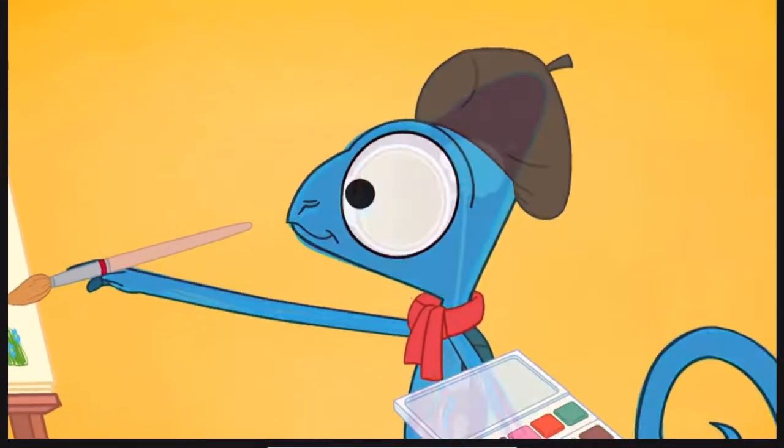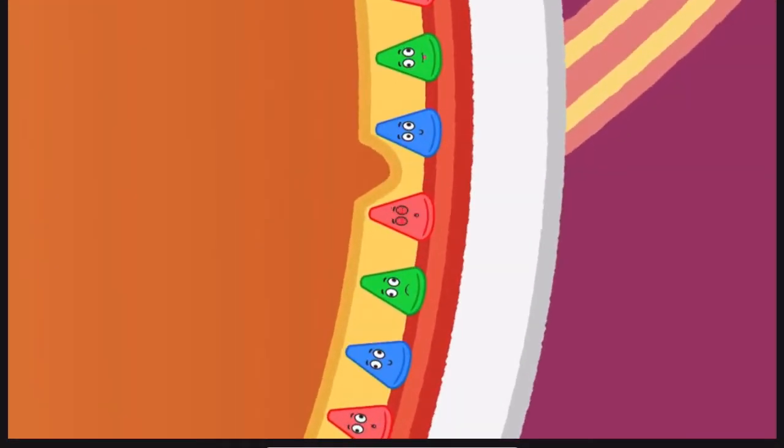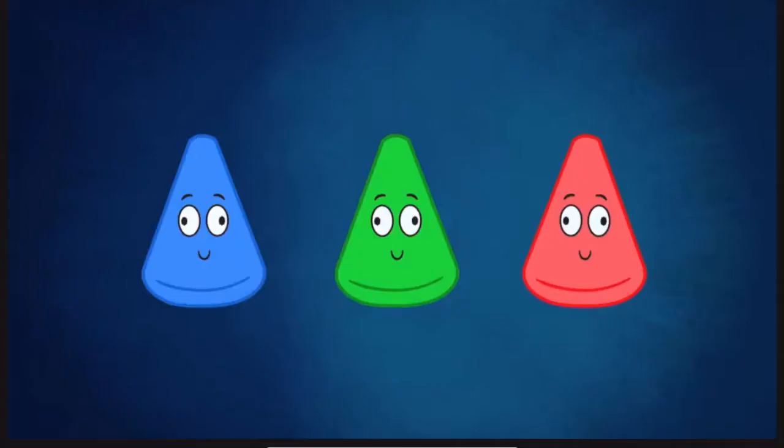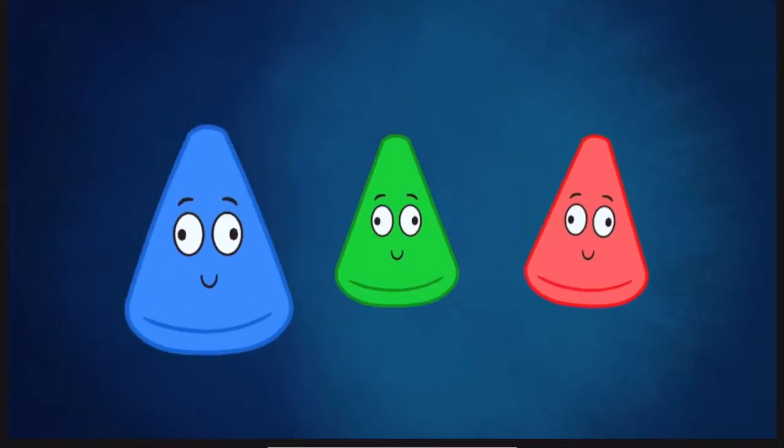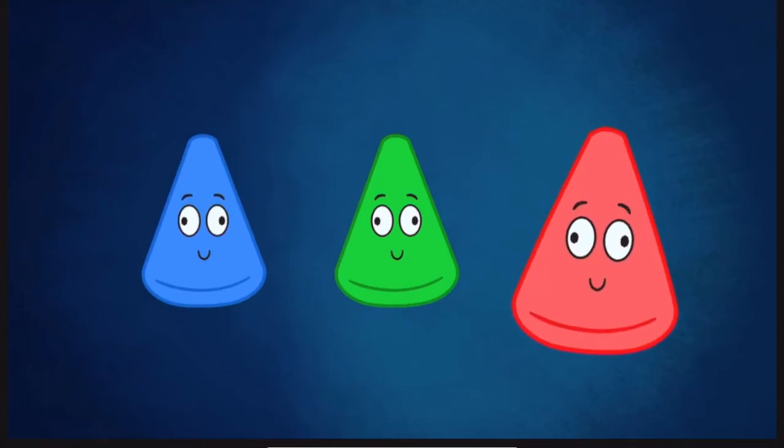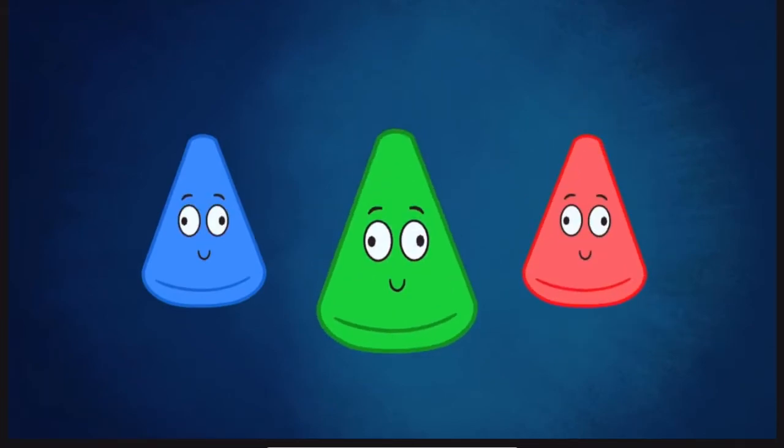In the back of our eyes, we have what are called cones. They're special cells that allow us to see colors. We have three kinds. One to see blue, one to see red, and one to see green.